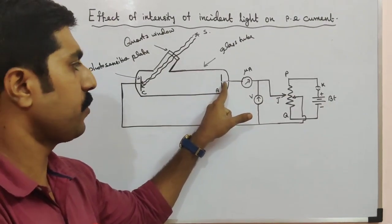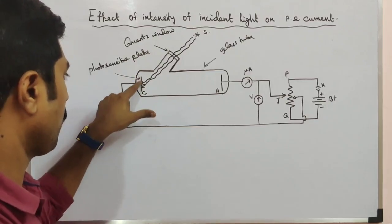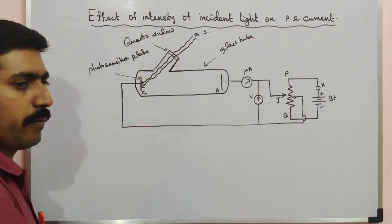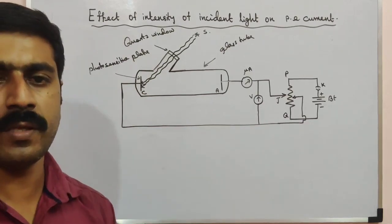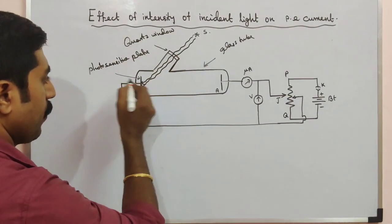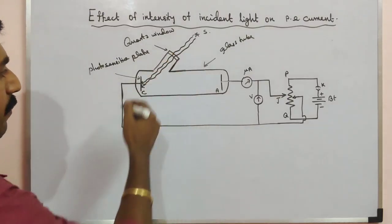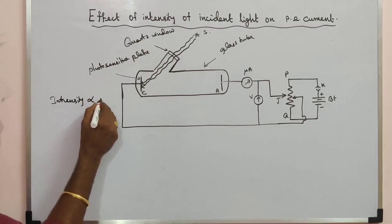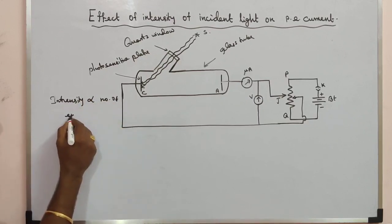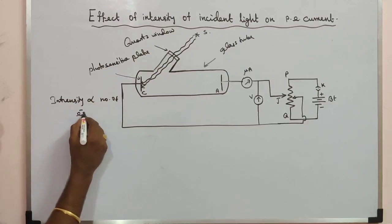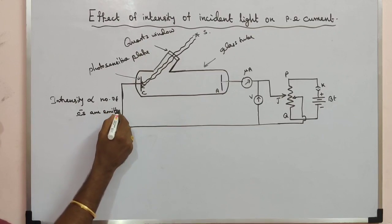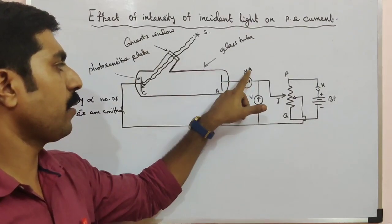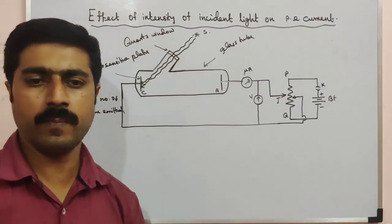C, the cathode, is connected with the negative terminal, and the anode is connected with the positive terminal. The anode maintains positive potential and the cathode maintains negative potential. The cathode emits electrons — so the intensity of the radiation is directly proportional to the number of electrons emitted.